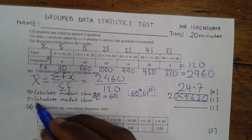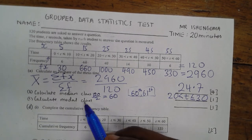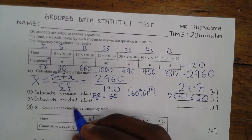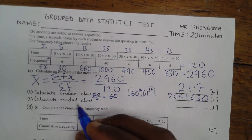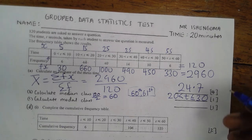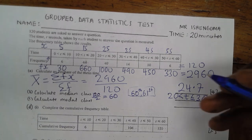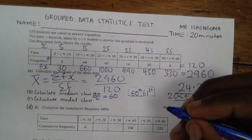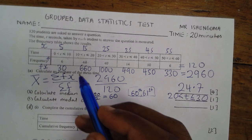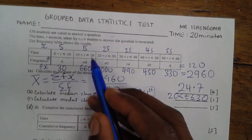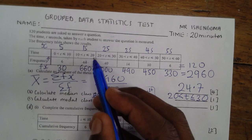The modal class is the class that contains the mode. The mode is the class that will contain the biggest number of data. The biggest number of data is represented by the frequencies, so the class with the highest frequency will be our modal class. In this case, our modal class is 10 to 20.